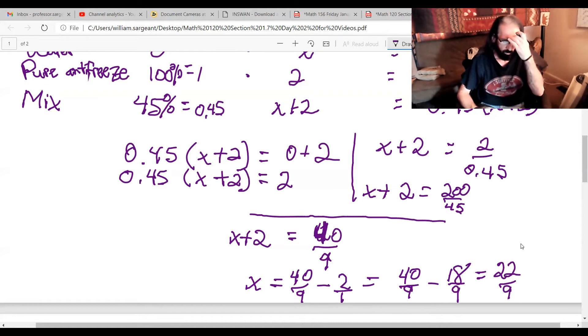And that would have to be 22 ninths, or as a mixed number 2 and 2 ninths of gallons of water.